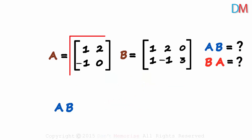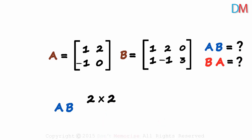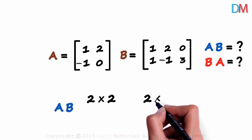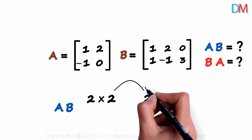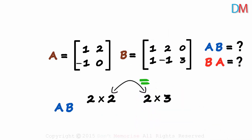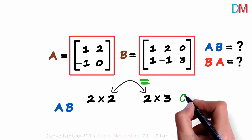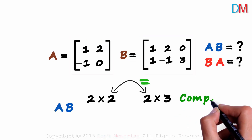What is the order of the first matrix? It has two rows and two columns — two by two. And the order of the second one? Two rows and three columns — two by three. The second and the third numbers are equal, meaning the number of columns of the first matrix equals the number of rows of the second. This tells us the two matrices are compatible for multiplication.